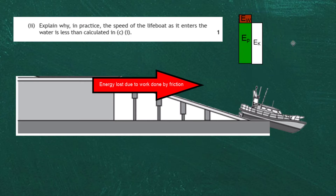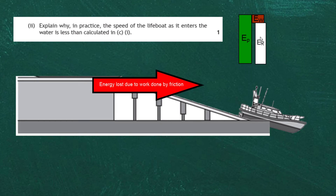The energy story: we start with potential energy Ep. The red block represents energy lost to friction and sound. Only the remaining green portion is converted into kinetic energy. Since Eₖ = ½mv², less kinetic energy means less speed. That is why the actual speed of the lifeboat entering the water is less than the theoretical maximum calculated in part C.